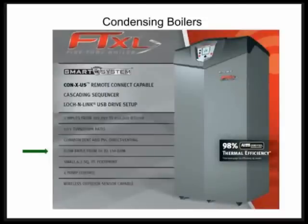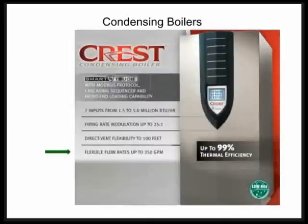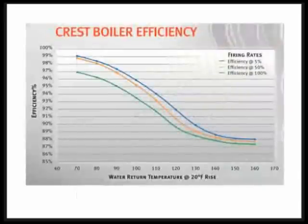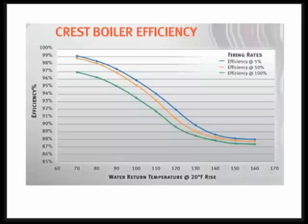This is what a condensing boiler looks like — one of many brands available. This happens to be a fire tube product with flexible flow rates from 10 to 150 GPM. Here's another fire tube product with flexible flow rates up to 350 GPM. Regardless of the brand or style of condensing product, every boiler's efficiency curves are going to look something like this.